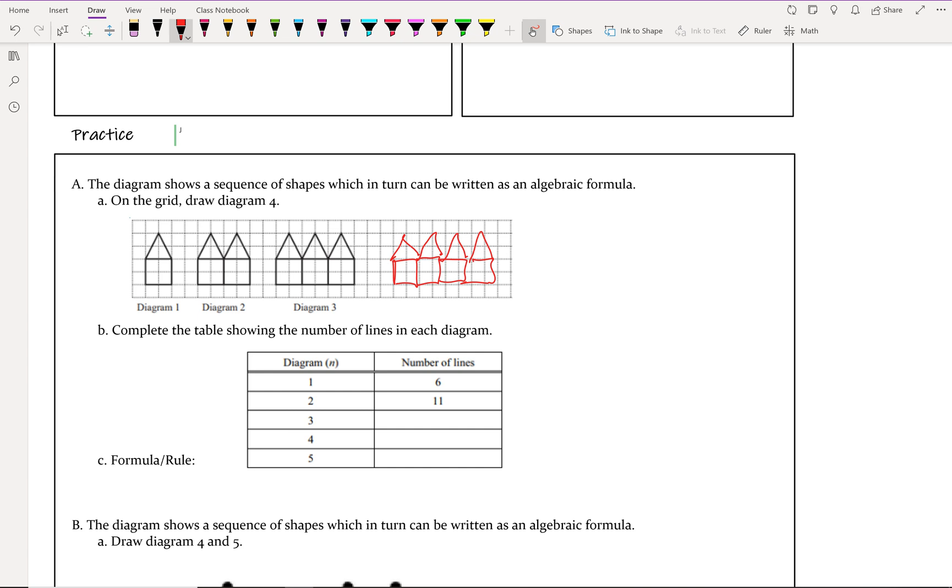Diagram three, we want to count that out. It's one, two, three, four, five, six, seven, eight, nine, ten for our three squares, eleven, twelve, thirteen, fourteen, fifteen, sixteen.